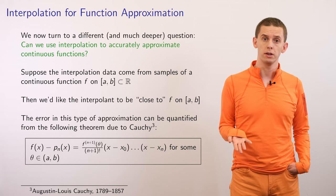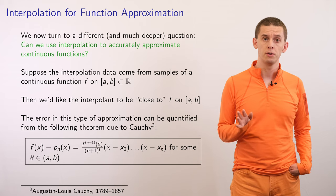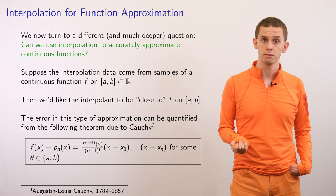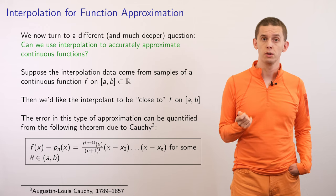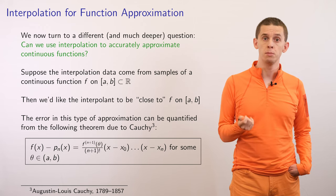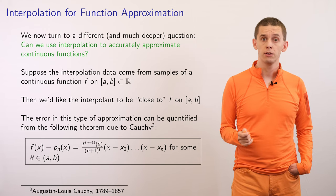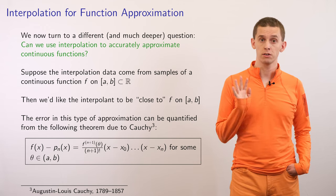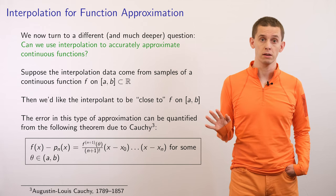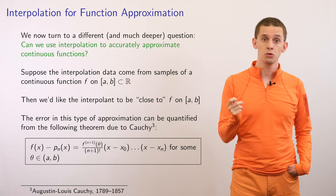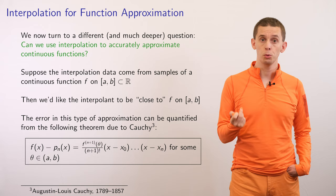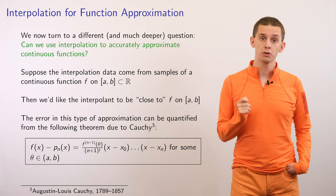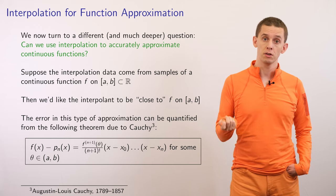Now that we've got a good answer to the discrete interpolation problem, let's look at a different and actually much deeper question: can we use interpolation to accurately approximate continuous functions? Suppose we have a continuous function f on the interval from a to b. One approach we could take is to sample that function at interpolation points x0, x1, up to xn, then use our existing methods to construct a polynomial interpolant and hope that it is a good approximation to f over the whole interval from a to b.